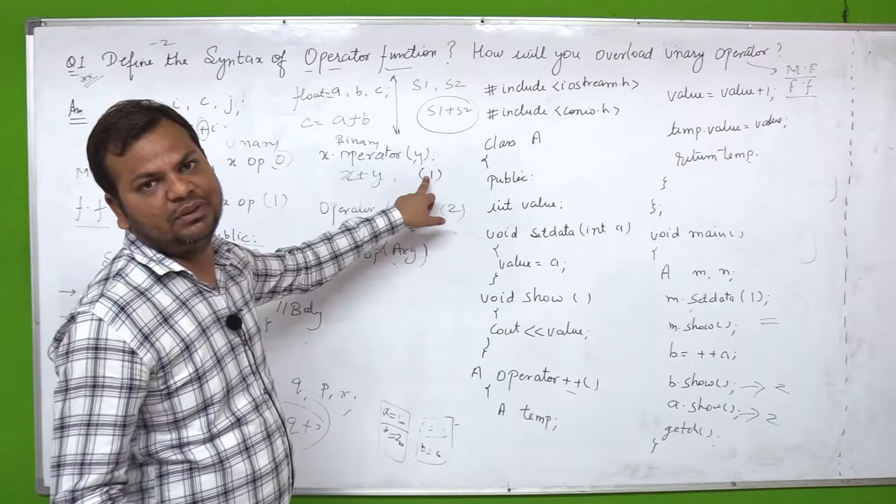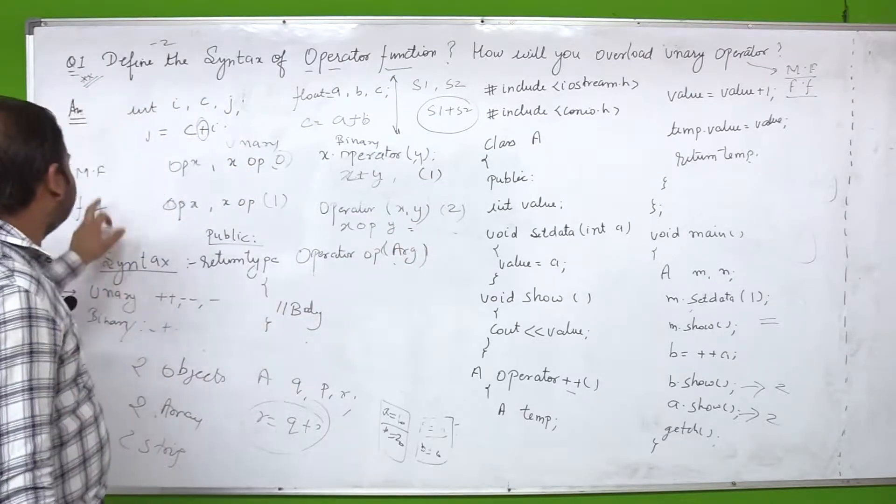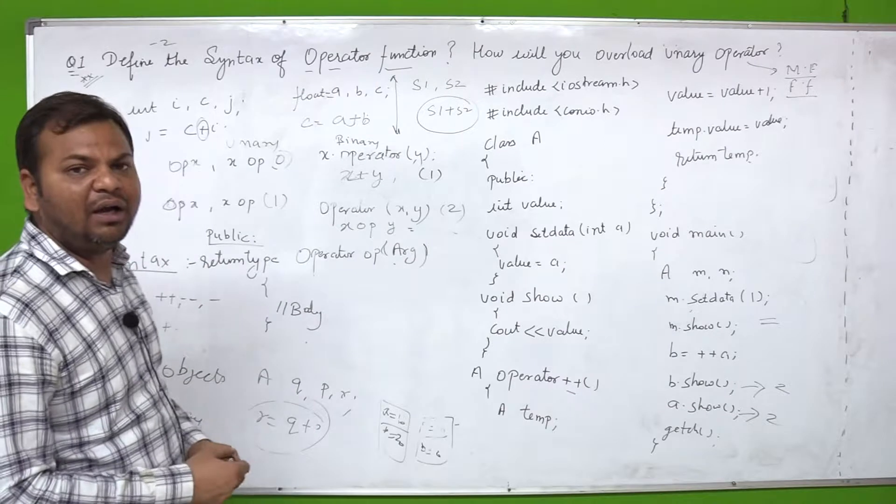Difference - when you have unary operator overloading member function through, you have argument pass here zero. Friend function through unary operator overloading, here one argument. Member function through binary operator overloading, here one argument. And if you have friend function through binary operator, here two arguments - one object here, two objects here.